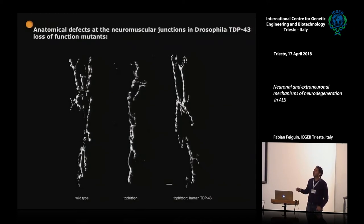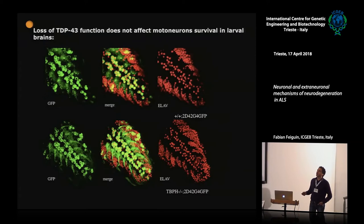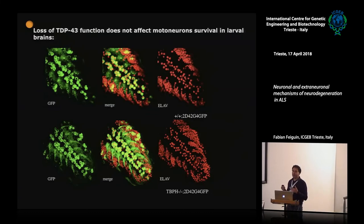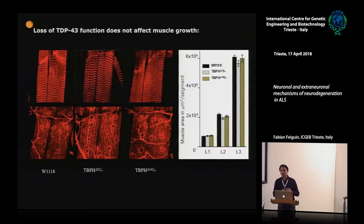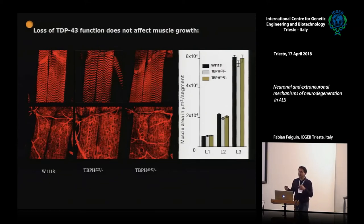When we rescued with the human protein, we could recover the innervation of the muscle, indicating these phenotypes are quite specific. When we looked at the number of motor neurons present in the brains, they were conserved — there is no motor neuron loss in these brains. This indicates it is not a general problem of neurodegeneration, but something more specific about innervation. The muscle also looks okay in terms of actin cytoskeleton and microtubule structure.